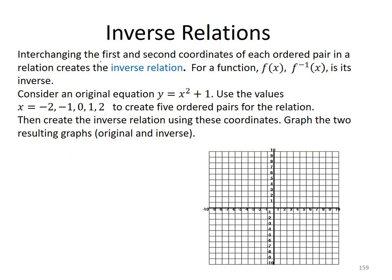Inverse relations. Interchanging the first and second coordinates of each ordered pair in a relation creates the inverse relation. For a function f of x, f inverse of x, that is, f to the negative 1 of x is how we write that, is its inverse.